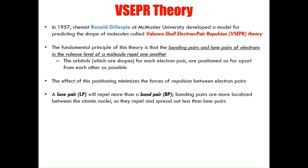A lone pair, signified by the letters LP, will repel more than a bond pair, signified by the letters BP. Bonding pairs are localized between the atomic nuclei. The positive charge of the nuclei keeps the electrons restrained to a smaller area and counteracts the negative charge these electrons radiate, thereby reducing the repulsive force. So bonding pairs will repel less and spread out less than lone pairs.